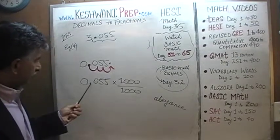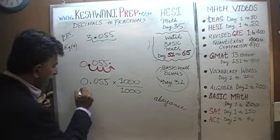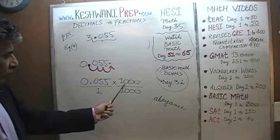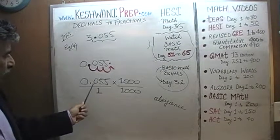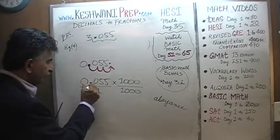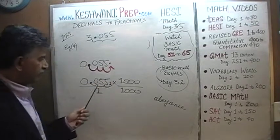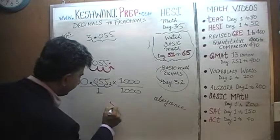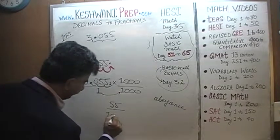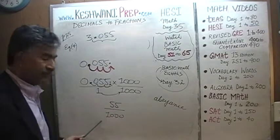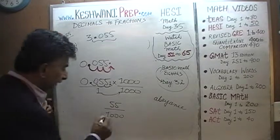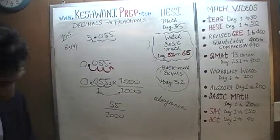We have 0.055, which we can write as 0.055 over one. We multiply the top by a thousand and the bottom by a thousand. Moving the decimal three places — one, two, three — it becomes fifty-five. So we end up with fifty-five over one times a thousand, which is one thousand. We can't leave it like this; we need to reduce it. It will make it easier if we write one thousand at the bottom.